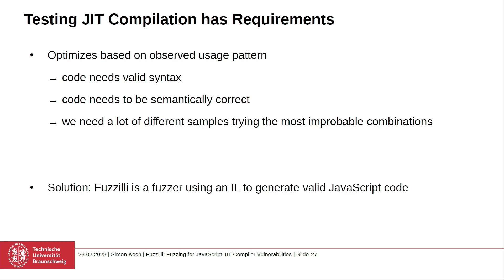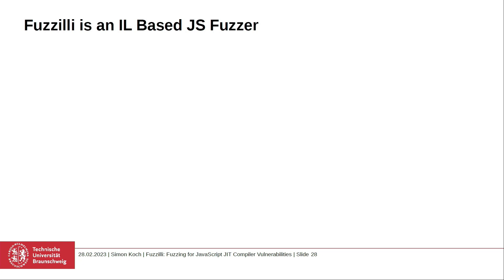What we came up with — or rather what Samuel came up with — is Fuzzilli. Fuzzilli is a fuzzer using an intermediate language to achieve valid syntax and semantically correct programs to generate JavaScript code. He developed it during his master's thesis in the beginning of 2019.